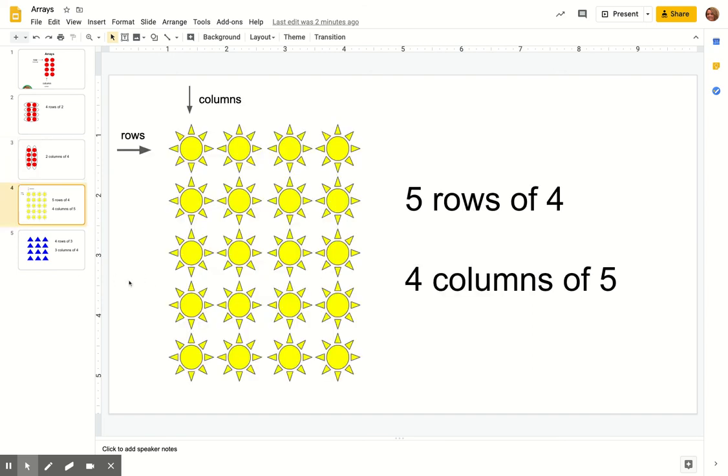Let's take a look at this one. I labeled the rows and columns for you again. This time I didn't circle it. Remember rows are horizontal. So how many rows do we have? We have one, two, three, four, five. So we have five rows, and in each row we have one, two, three, four. So five rows of four.